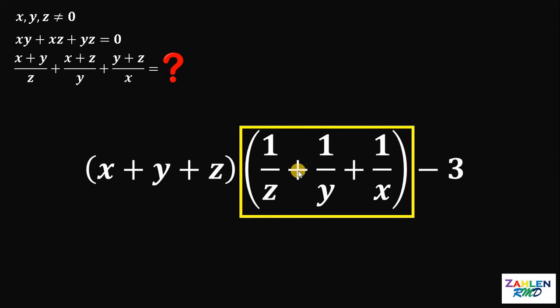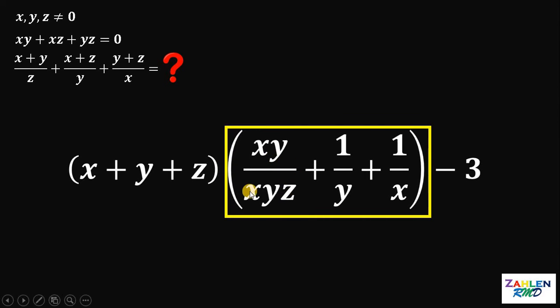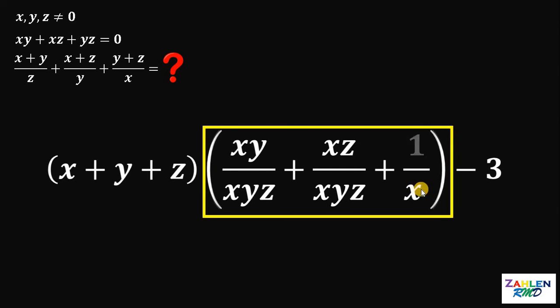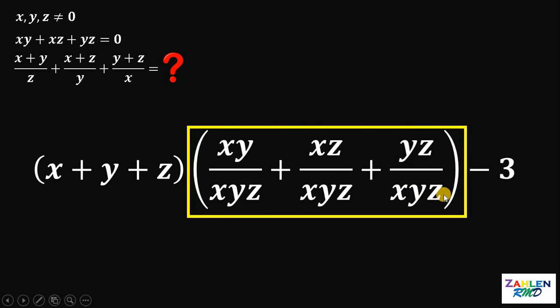So we have 1 over z plus 1 over y plus 1 over x. Now, take note that 1 over z can be written as xy all over xyz. Because if we cancel out xy, this is just 1 over z. Now, 1 over y can be written as xz all over xyz. So what we're going to do here is to make the denominator of these three fractions the same. So for the last one, 1 over x can be written as yz all over xyz.